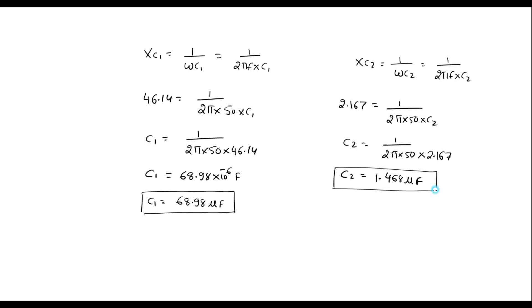Thus, we have calculated two values of capacitor. It means that for C1 and C2, the given circuit will resonate for F equal to 50 hertz. Thank you for watching.